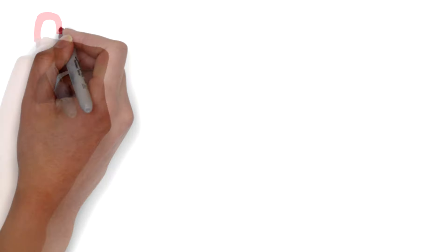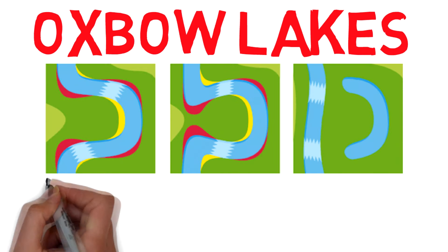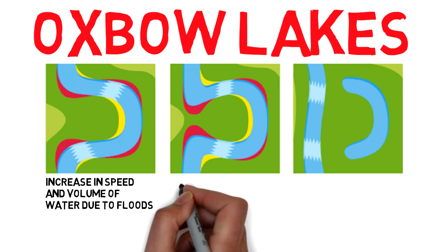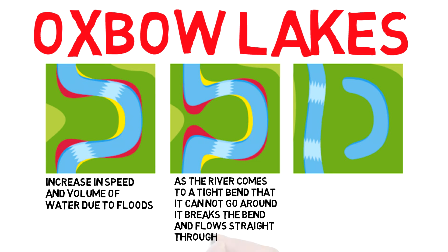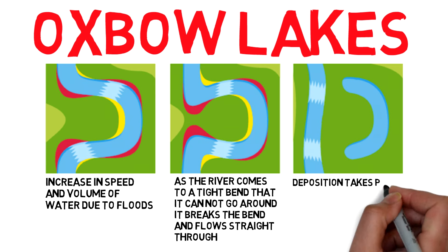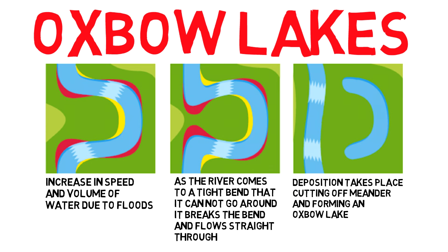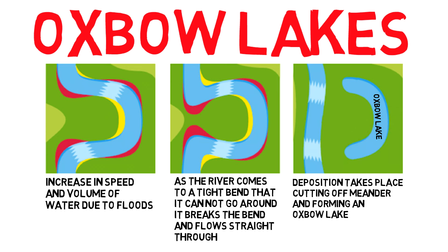Now we're going to move on to the features of the old age river. The first feature is oxbow lakes — horseshoe-shaped lakes. During floods, there is an increase in the speed and volume of the river. As the river comes to a tight meander it cannot go around, it simply bursts its banks and cuts through the bend. The water flowing around the bend will now be moving slowly, so deposition will take place. Over time, the meander becomes cut off from the main river because of deposition, and this cut-off meander is then called an oxbow lake.